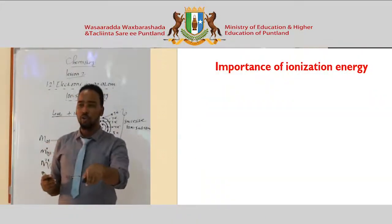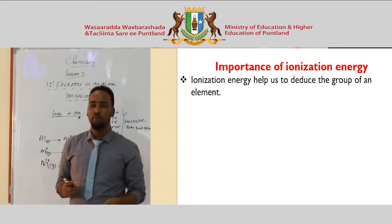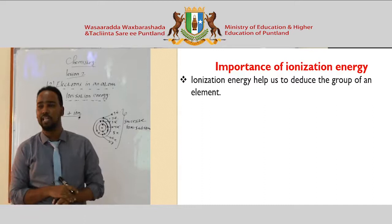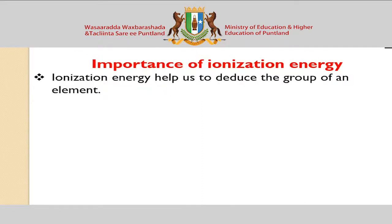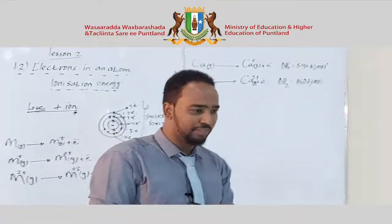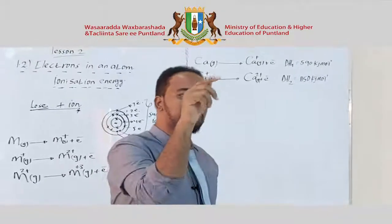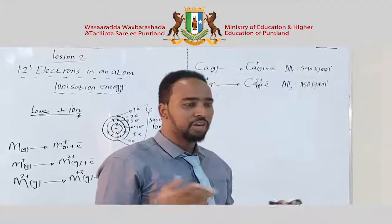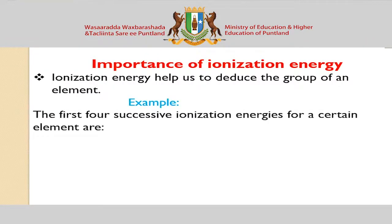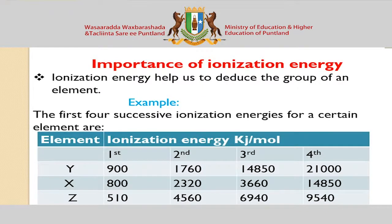The successive ionization energy is important because it tells us about the structure of the atom. Using successive ionization energies, we can identify which group of the periodic table an element belongs to. The idea is that a large jump in ionization energy between successive values indicates the boundary between electron shells.